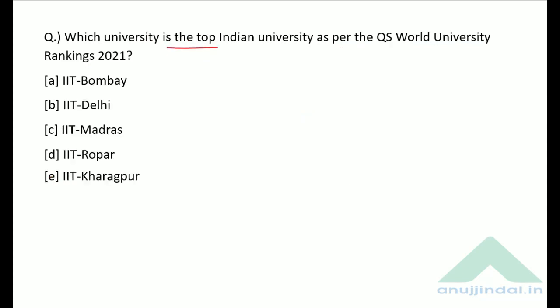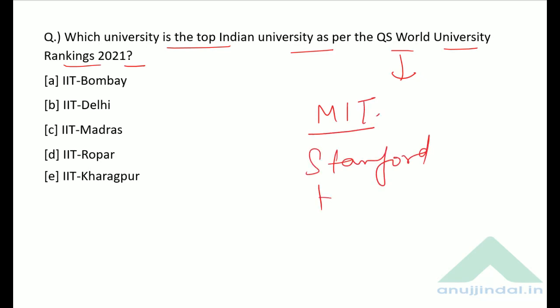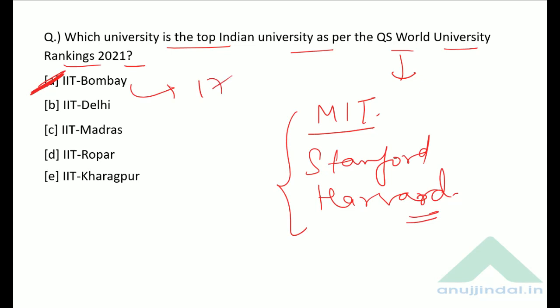Which is the top Indian university as per the QS World University Rankings 2021? The number one university in the world is MIT, number two is Stanford, and number three is Harvard. From India, IIT Bombay is ranked first, at an overall rank of 172.